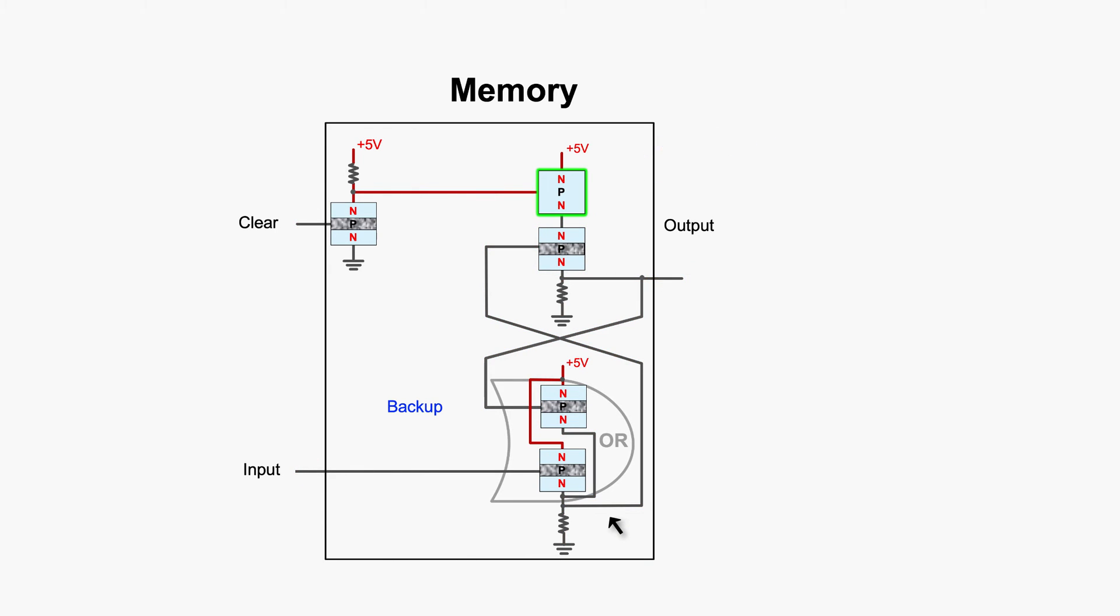This parallel gate is OR gate. Serial gate is AND gate. This is an inverter. It's called set, reset, and OR latch.